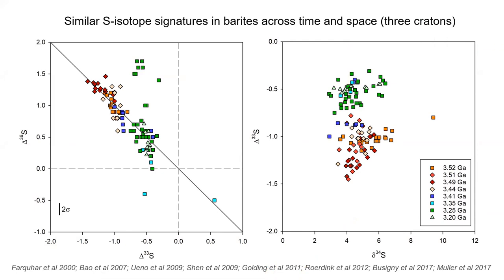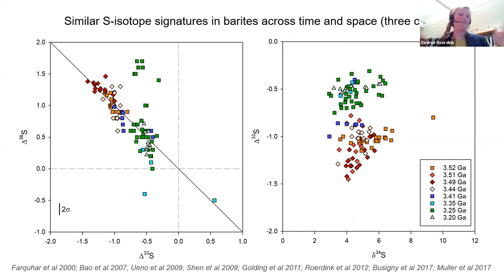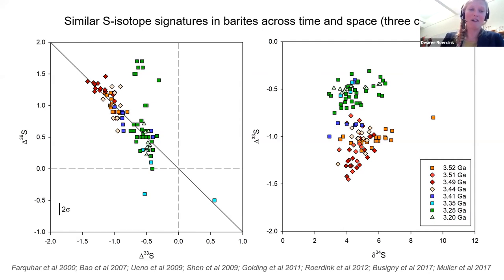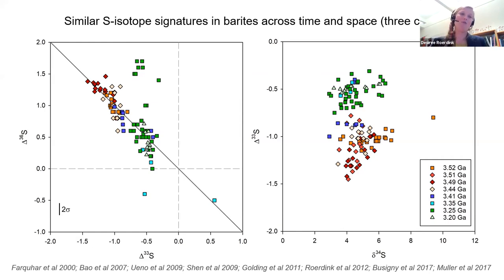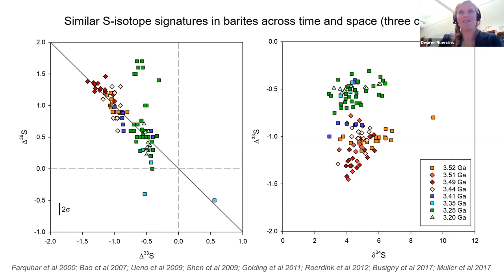Having argued that barite is a recorder of sulfate produced in atmospheric photolysis reactions, there is still a discrepancy between lab experiments and modeling results for photolysis versus the rock record. This has led to suggestions that barite did not trap photochemical sulfate but was produced by microbial oxidation of sulfide. However, looking at the overall barite sulfur isotope record, it seems more likely that the barite traps this photochemical sulfate via seawater at a global rather than local scale.